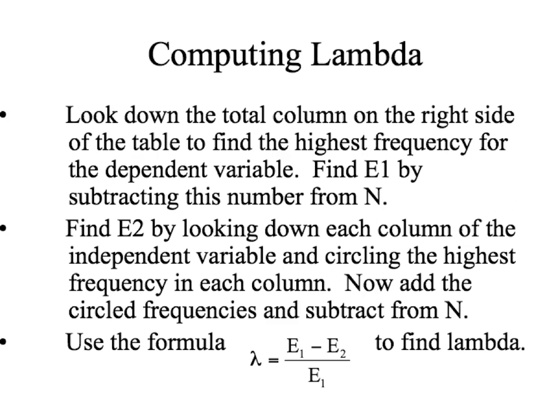The equation for lambda equals E1 minus E2 divided by E1. The trick is figuring out what E1 and E2 are. To find E1, we look down the total column on the right side of the crosstab to find the highest frequency for the dependent variable, then subtract that number from N. E2 is calculated by taking N and subtracting the highest frequency in each column of the independent variable.